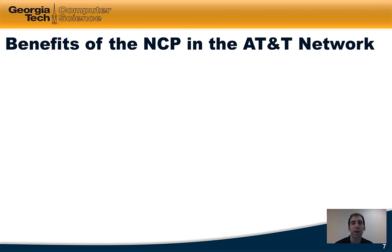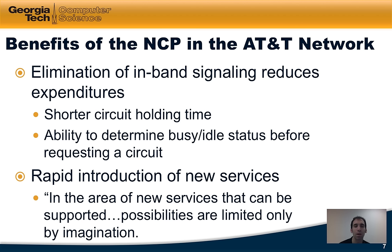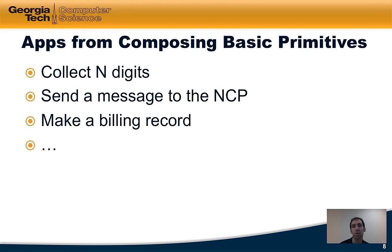Technical reports describing the NCP highlight several advantages. First, elimination of in-band signaling reduced expenditures. With a better view of the network, they were able to shorten the time circuits were held up. Specifically, the ability to determine the busy or idle status of a circuit or trunk line before requesting it allowed for more efficient and quicker allocation of resources. Second, the reports cite the potential for rapidly introducing new services — quoting: 'the possibilities are only limited by imagination.'